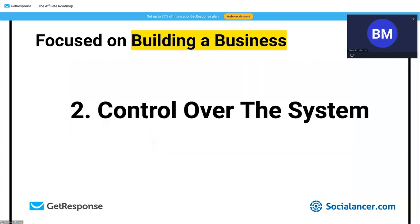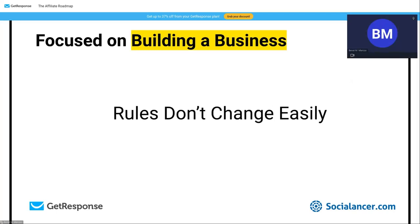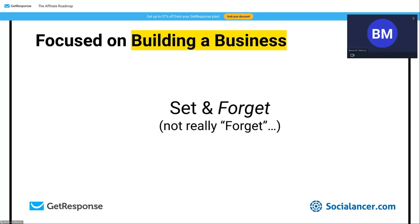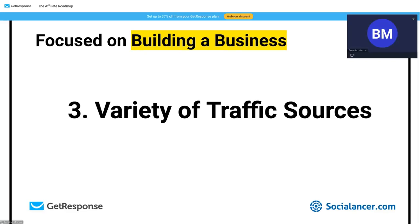When you have relationships, rules don't change easily — because these people call you first, since you're bringing real business to them. You are someone to them, not just a number. This is like having your own development team without the risk of creating a software yourself. You set the system, and the system keeps going — and that's why you can use a variety of traffic sources when building a business.